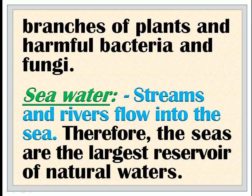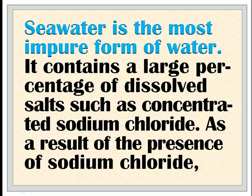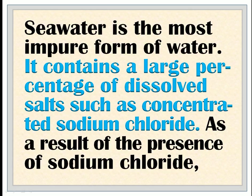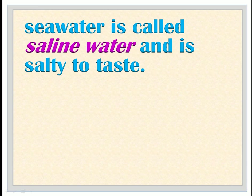Sea water: Streams and rivers flow into the sea. Therefore, the seas are the largest reservoir of natural waters. Sea water is the most impure form of water. It contains a large percentage of dissolved salts such as concentrated sodium chloride. As a result of the presence of sodium chloride, sea water is called saline water and is salty to taste.